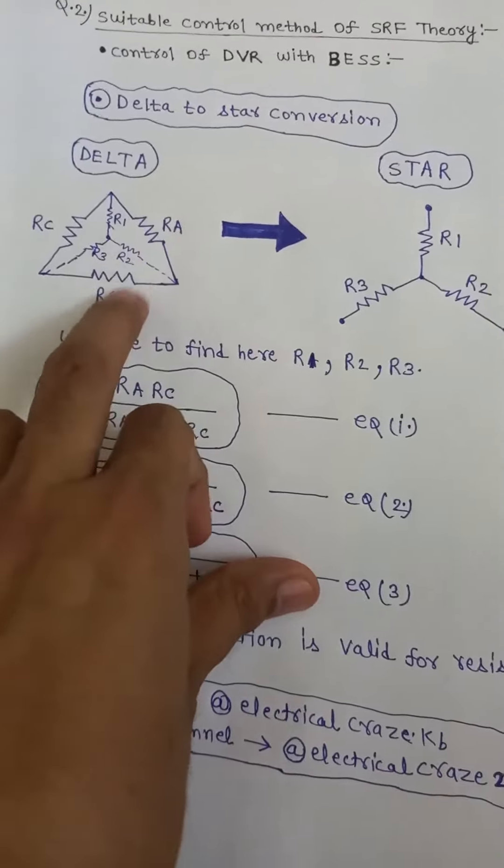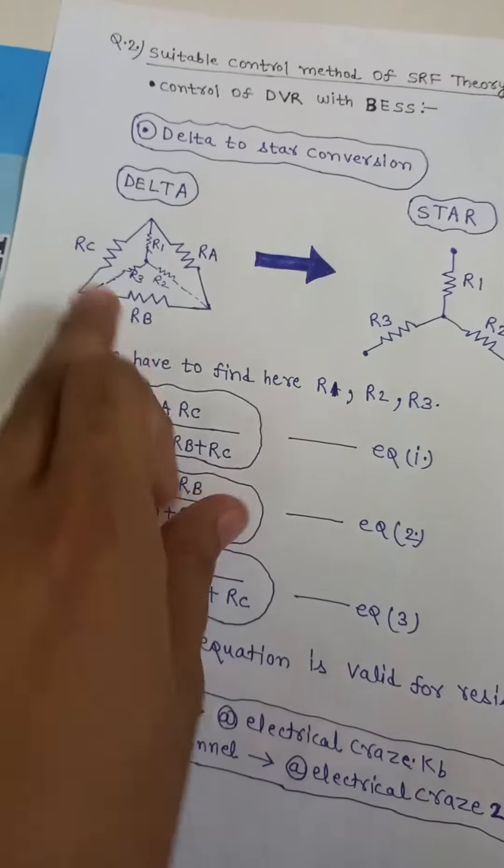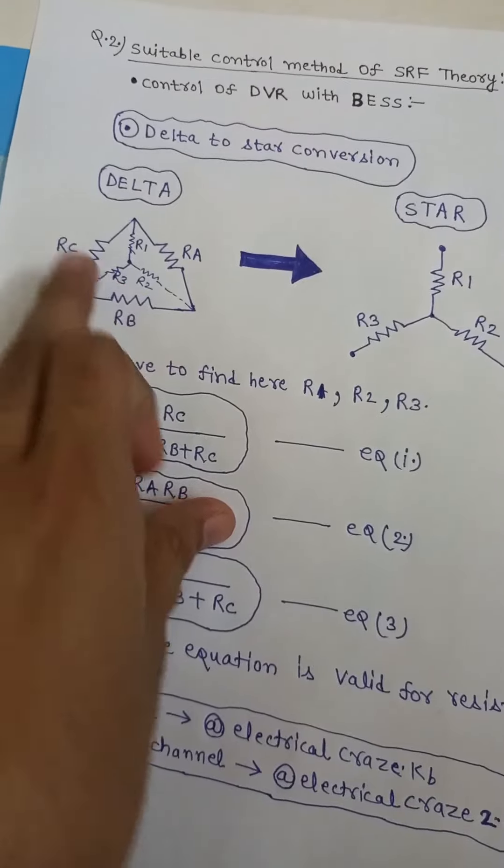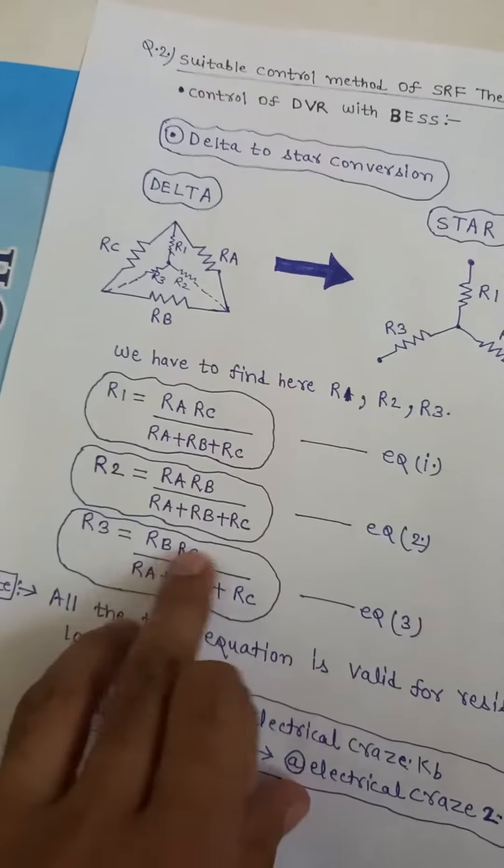For R2, common resistances combined together surrounded by it are Ra, Rb. Put Ra, Rb. For R3, two resistances that is surrounded by R3 are Rc, Rb. So put Rc, Rb.